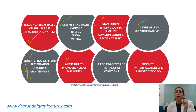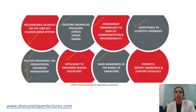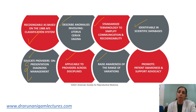That means if a pediatrician is having these types of cases, they can also easily use this classification. It has raised awareness regarding the range of variations — for example, OHVIRA syndrome has been described by several names. It has been emphasized that any anomaly involving the upper part of the vagina and uterus is many times associated with renal anomalies on that side, so patients with these uterine anomalies should be assessed for renal anomalies. Patient awareness and support advocacy is also inherent to this classification.